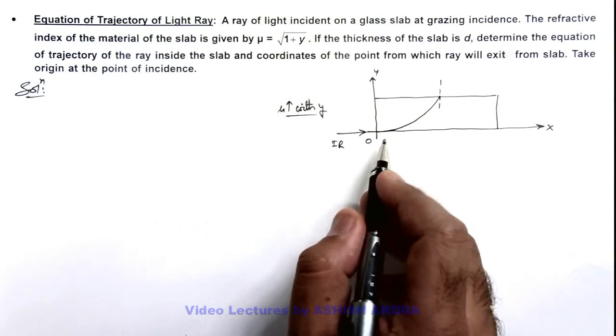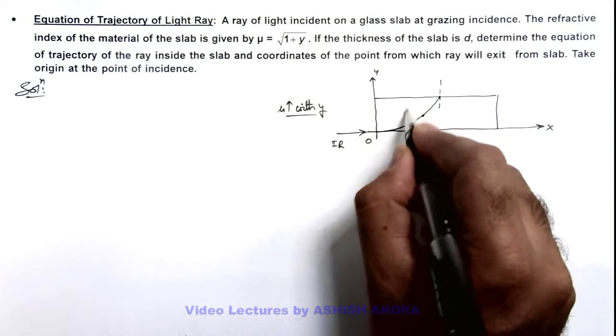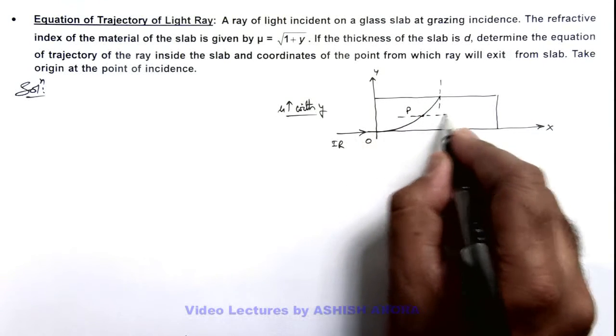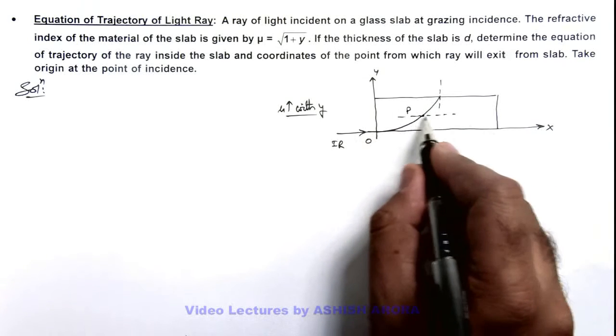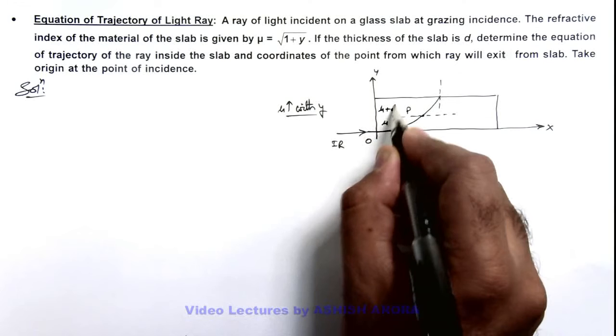In this situation, from origin it is entering and we consider a point P inside this slab, where we can see this is the boundary of a glass slab where refractive index on one side is μ, other side is μ + dμ.